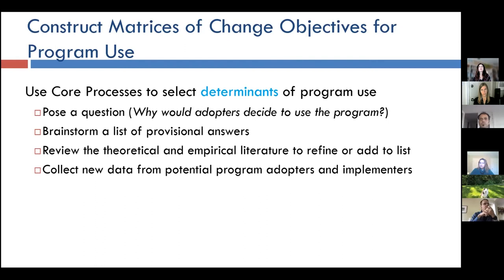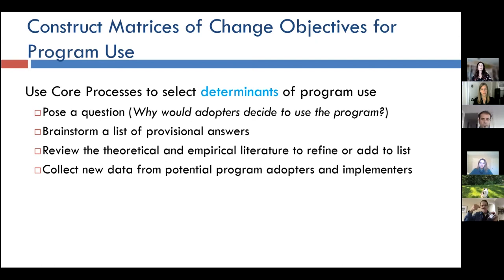Throughout this process, we use what we call core processes — a way to help answer really any question, particularly when a team is working on the answers. When trying to think about determinants of program use and implementation, we can pose a question, brainstorm a provisional list of answers, review the theoretical and empirical literature, and collect new data. Articulating a set of processes to help at each step is useful for planners.